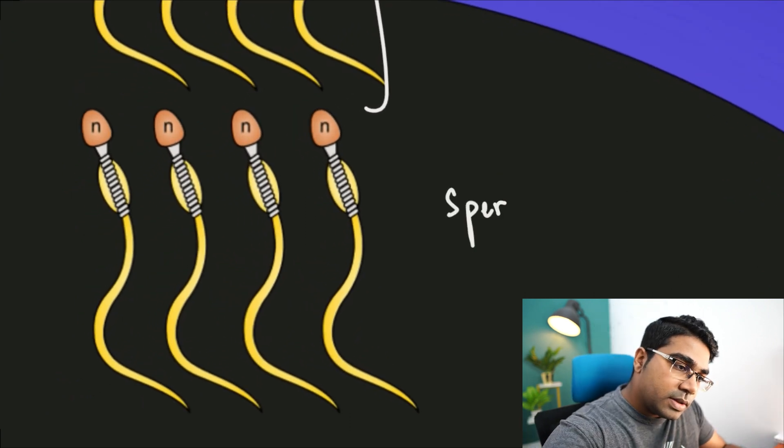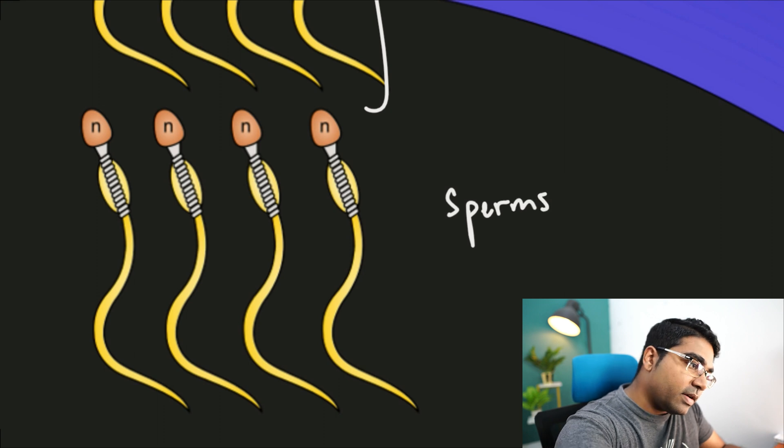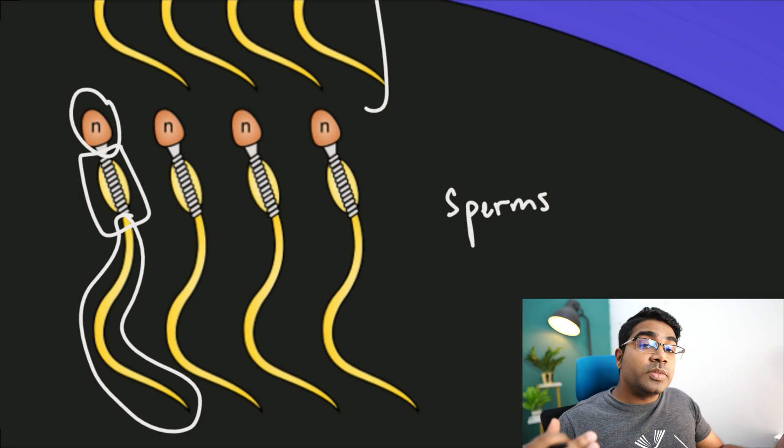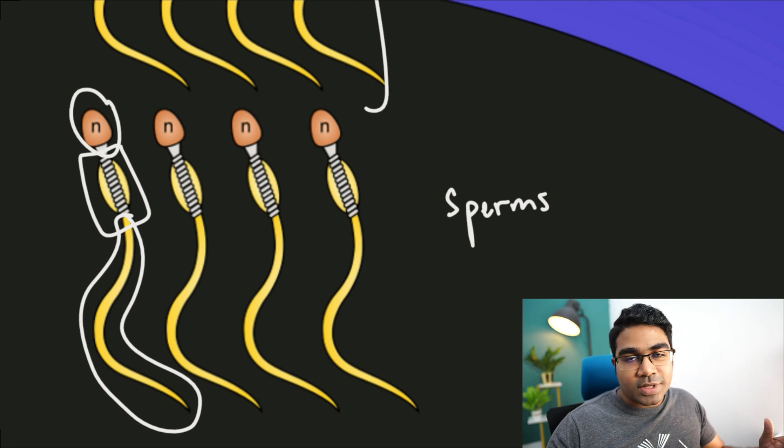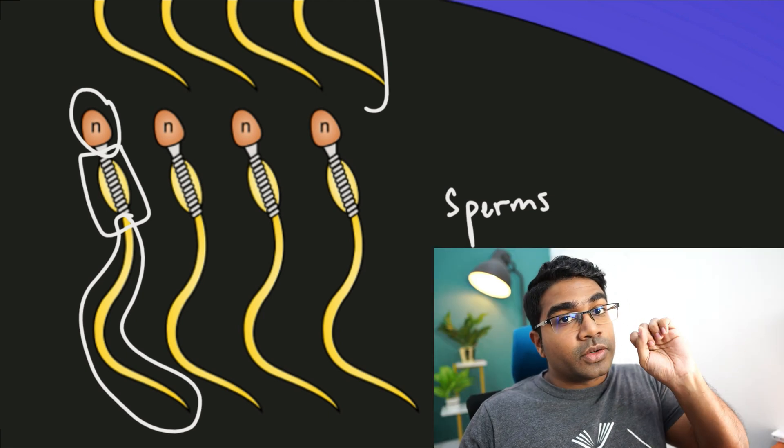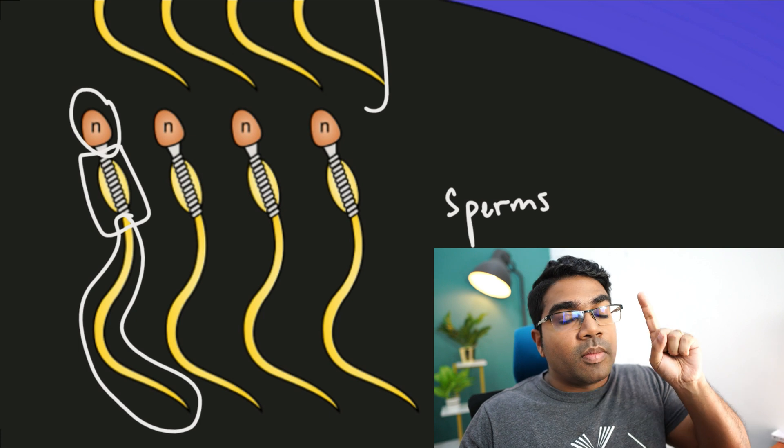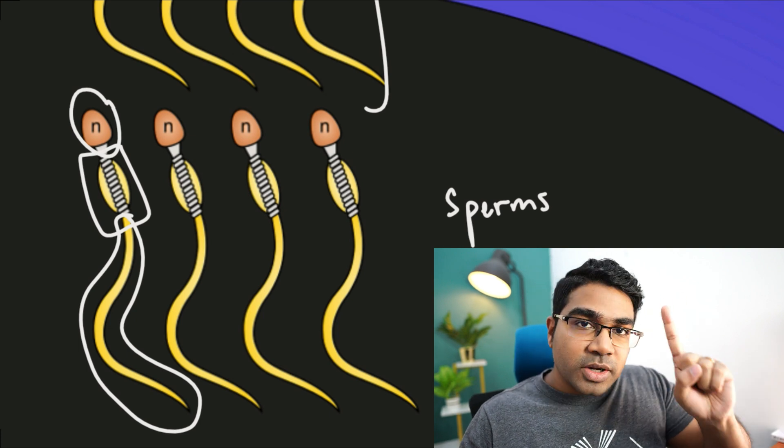These sperm cells have a head, a midpiece, and a tail which allows them to swim towards the secondary oocyte for fertilization. By the end of the process, we have a total of four sperm from one single spermatogonium.